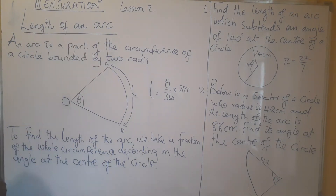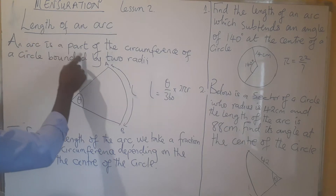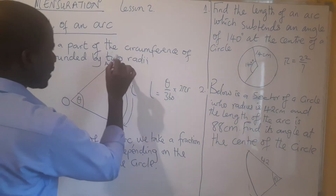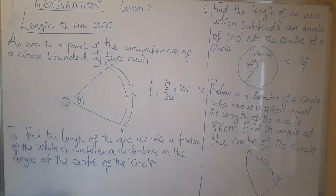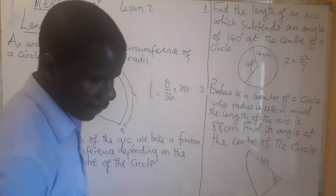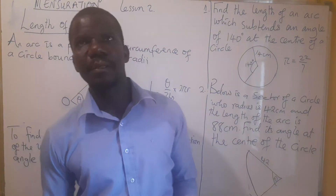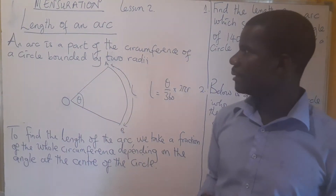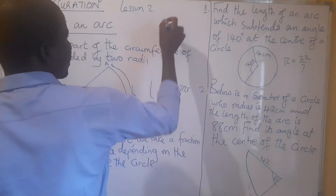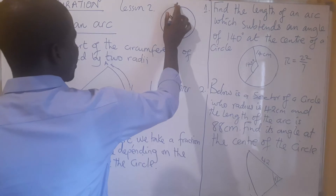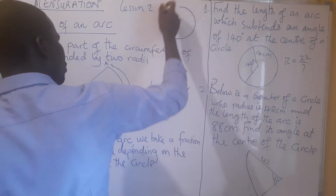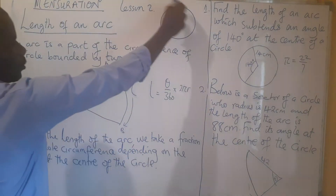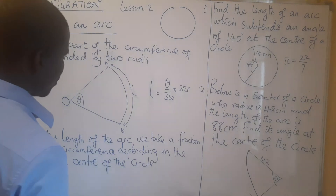What is an arc? An arc is a part of the circumference of a circle bounded by two radii. We have to establish what the circumference of a circle is. The circumference of a circle is the distance around the circle — like the perimeter of a circle. This is what we call the circumference of a circle.